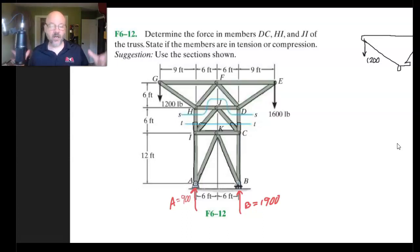So here we've got something that looks like one of those high tension poles or structures that carries electricity across the country. It's got a couple of loads on the edges there, 1200 and 1600. And what we're asked to do is to find the force in DC, HI and JI.